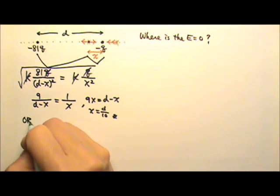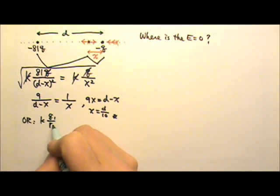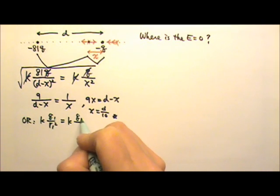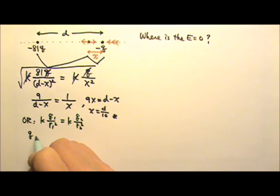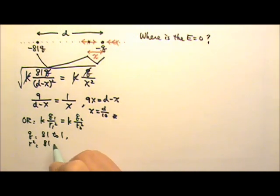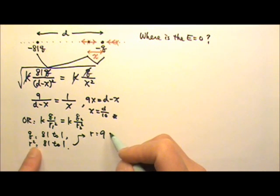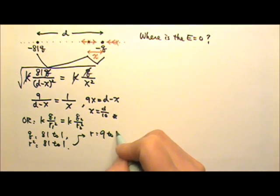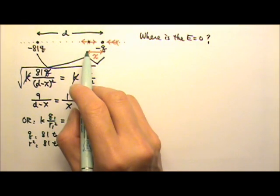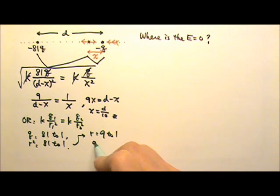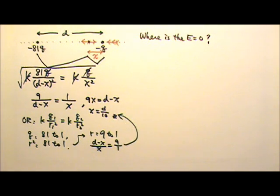Alternatively, I can use the ratio method: since kq₁ over r₁² must equal kq₂ over r₂², if the charge ratio is 81 to 1, then r² must also be 81 to 1. Taking the square root of both sides, r must be 9 to 1. Since the distances are d minus x and x, the ratio (d minus x) to x equals 9 to 1, giving the same answer.